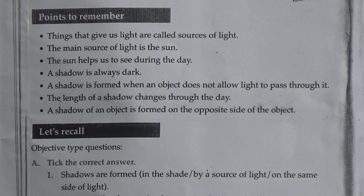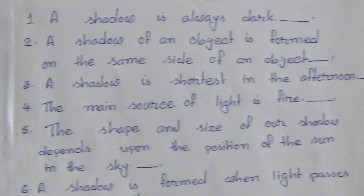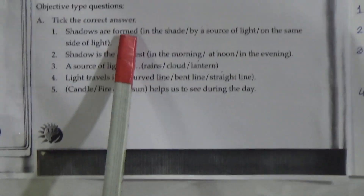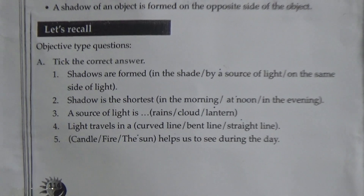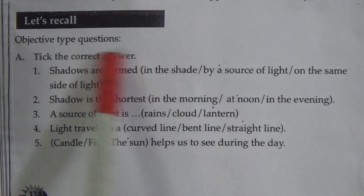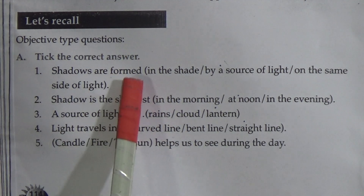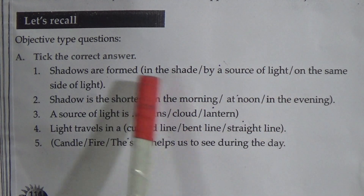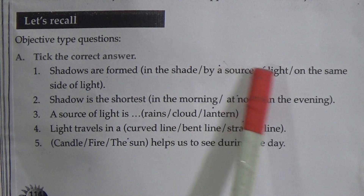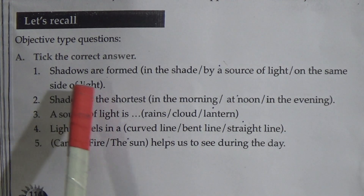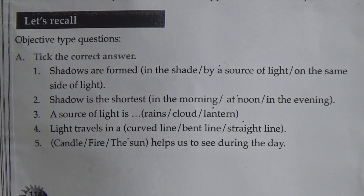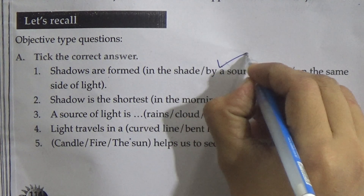Now we do the exercise. In your book exercise, there are three exercises: tick the correct answer, write true-false, and fill in the blanks. We do exercise number A — tick the correct answer. Number 1: Shadows are formed by a source of light. So, you put the tick mark on that option.